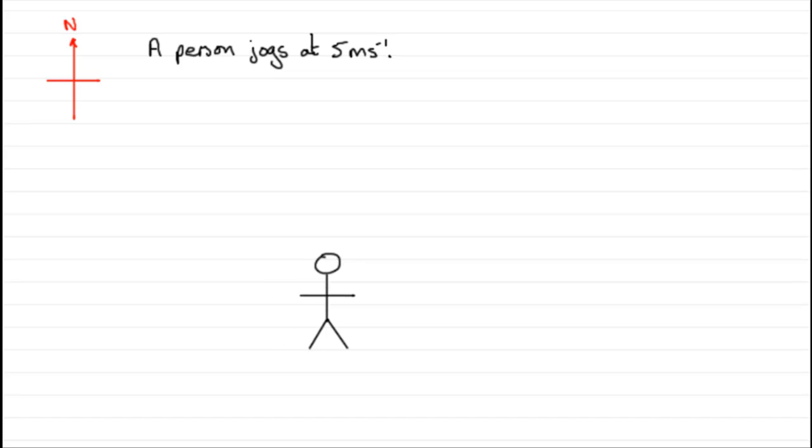They can jog around in any direction that they like. What I'm giving you is a quantity that involves magnitude or size alone. That magnitude is the 5 meters per second, often referred to as speed.